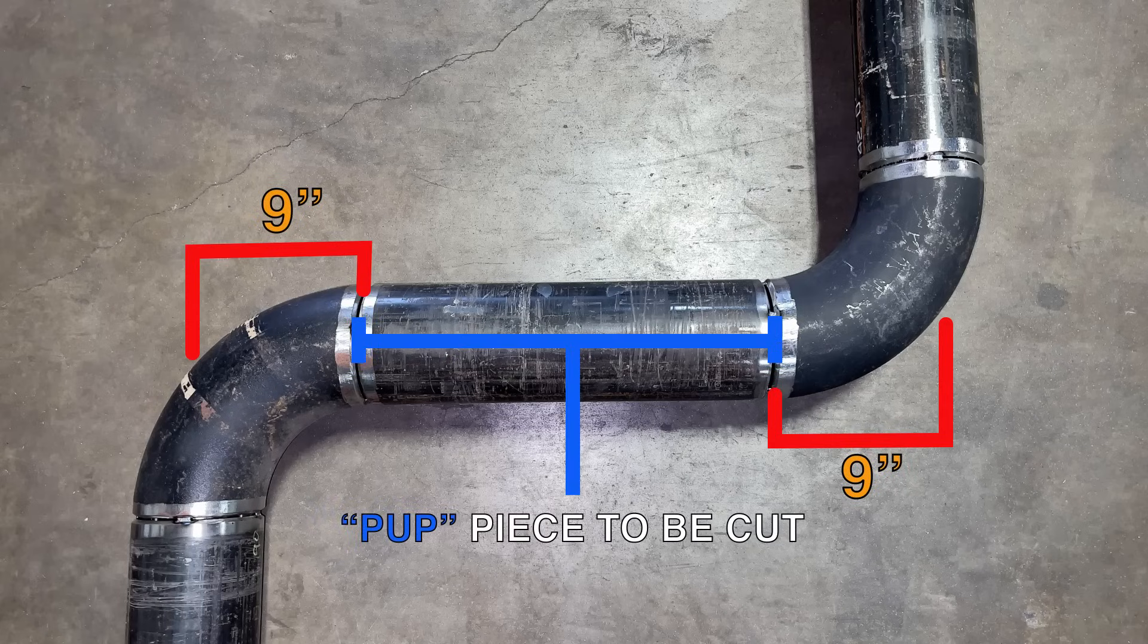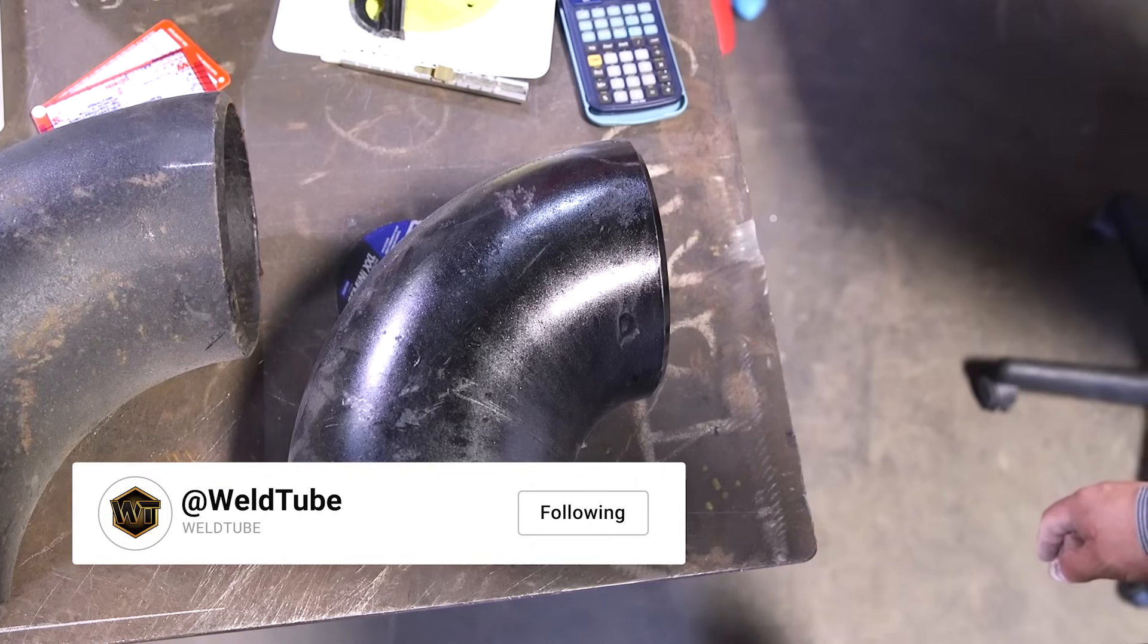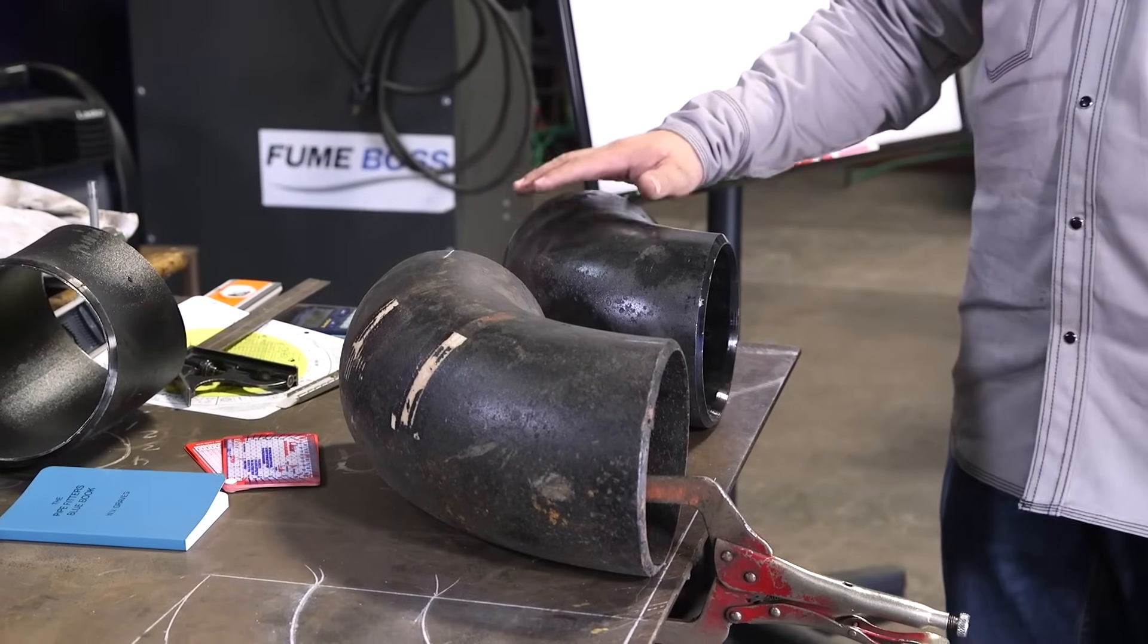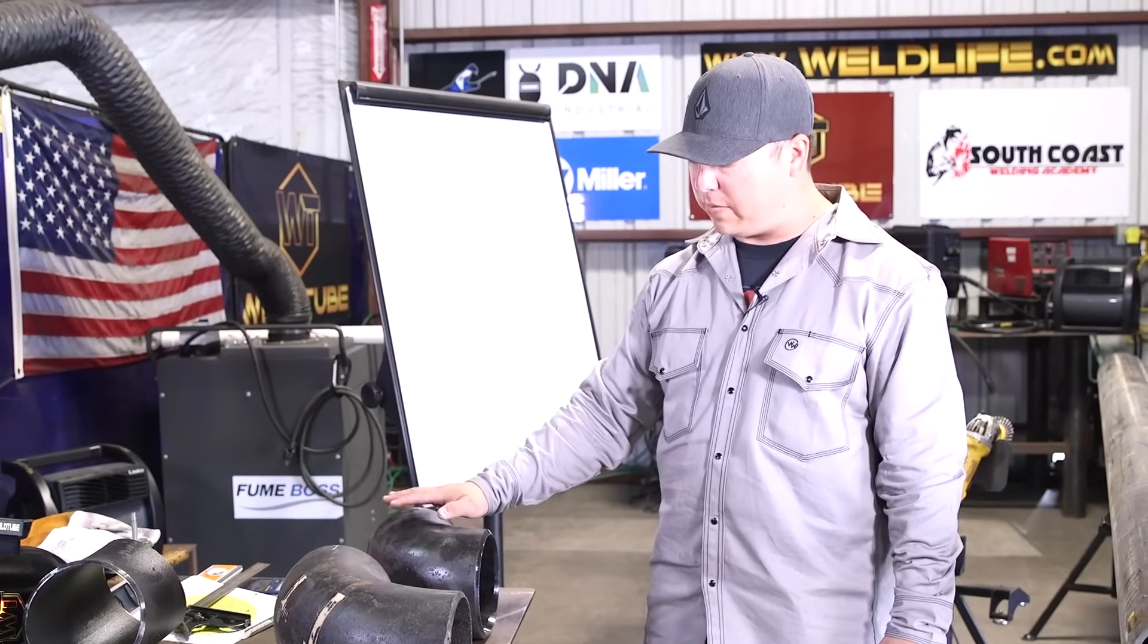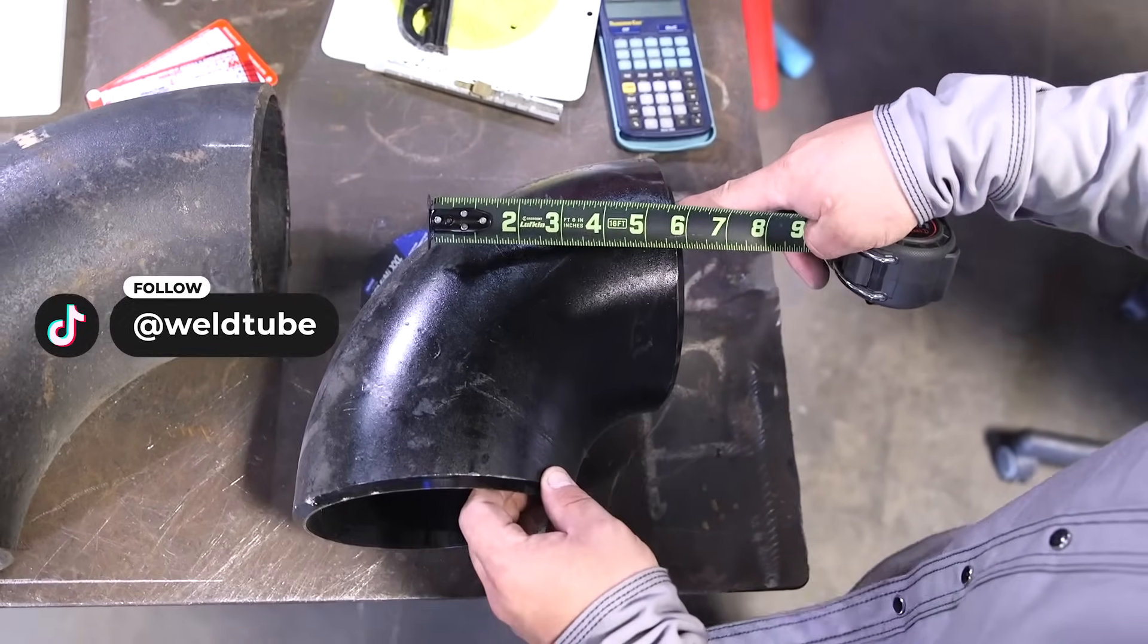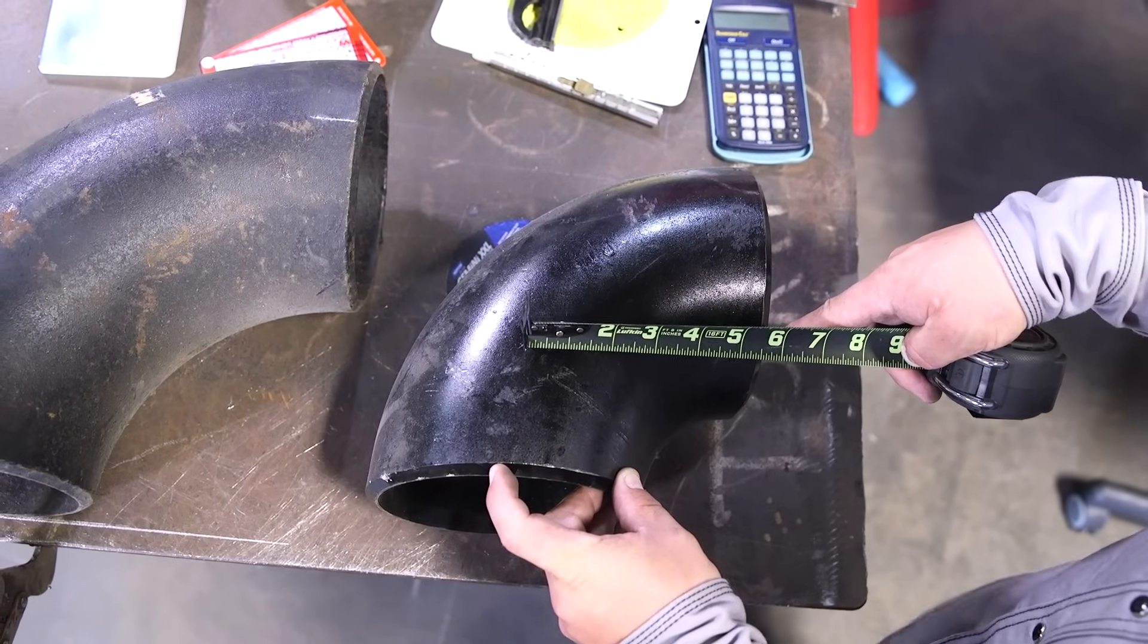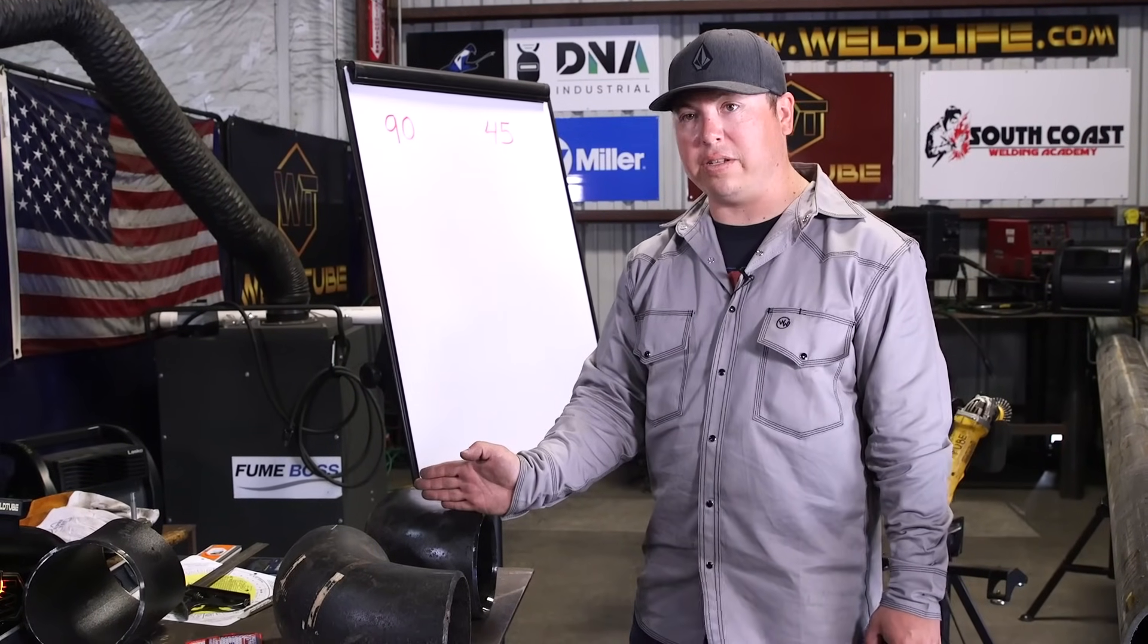So you may have heard me say the term long radius 90. A lot of you may have not known what that is. As you can see the difference here, I have a long radius 90 and a short radius 90. The short radius 90 has a much tighter turn and the takeoff is very different than a long radius 90. On the short radius 90, you're only going to remove one nominal pipe size for your takeoff. So in this particular case, we have a 6 inch short radius 90. Our takeoff from end to center of 90 will be 6 inches.